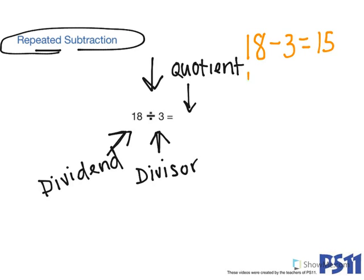Then I take the answer here, and I subtract another group of 3 from it because I am gradually taking groups of 3 away until I get to 0. So 15 minus 3 is 12. I take the 12, I subtract 3 from 12, I end up with 9.